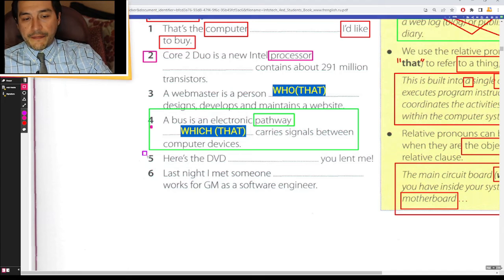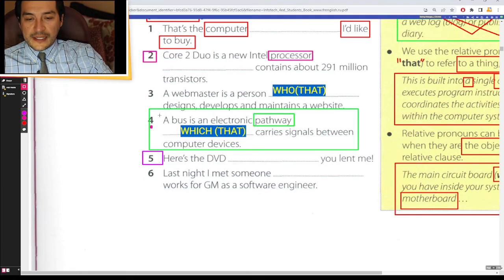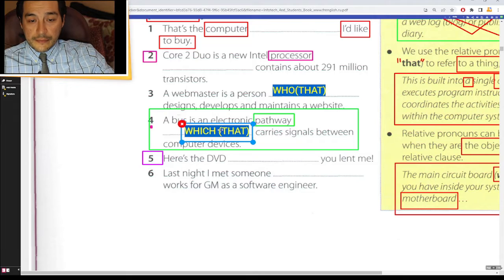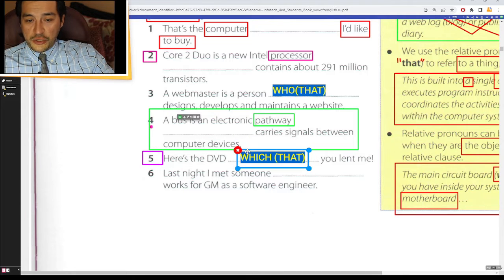Number five, here's the DVD. DVD, person or thing? Obviously, which you let me?